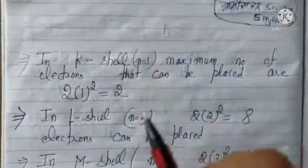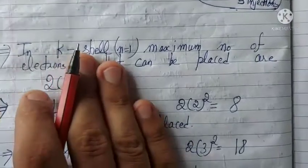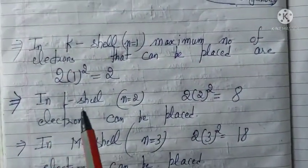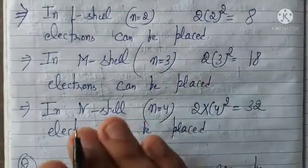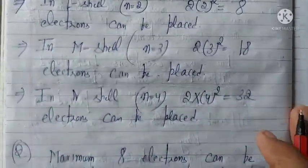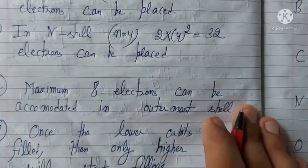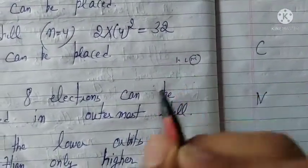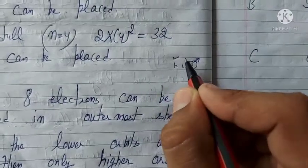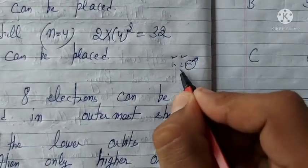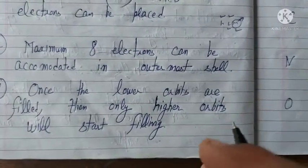Using the formula 2N²: K shell (N=1) can hold a maximum of 2 electrons, L shell (N=2) can hold 8 electrons, M shell (N=3) can hold 18 electrons, and N shell (N=4) can hold 32 electrons. The second rule: maximum 8 electrons can be placed in the outermost shell. The third rule: lower orbits will be filled first, then the higher orbits will start filling.